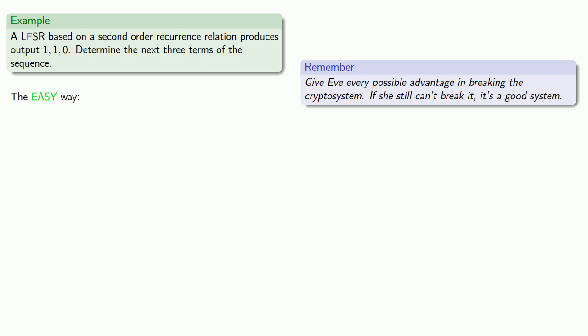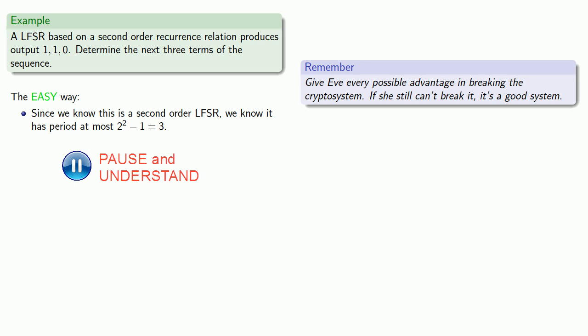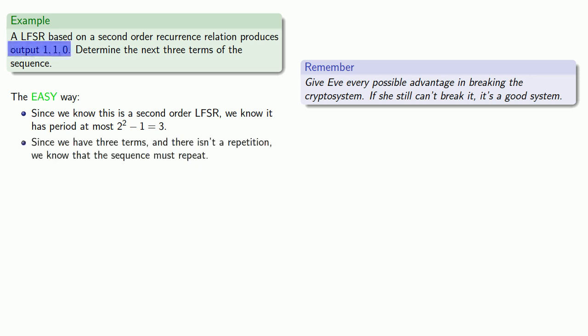The easy way to crack this system, since we know this is a second order LFSR, we know it has period at most 2^2 - 1, or 3. Since we have three terms and there isn't a repetition, we know the sequence must repeat. And so after these initial three terms, the sequence has to repeat itself: 1, 1, 0, 1, 1, 0, and so on.